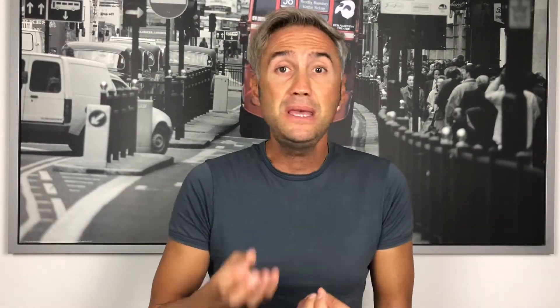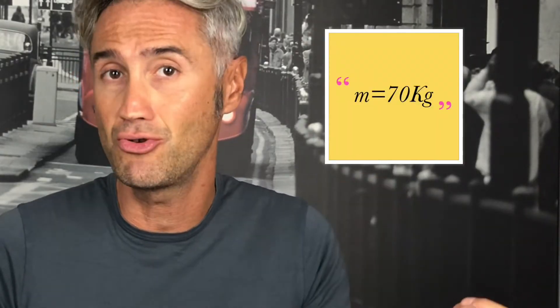The second base quantity is mass. The symbol of the quantity is m, the unit is kilogram, and the symbol of the unit is kg. For example, I have a mass of 70 kilograms — you can write M equal to 70 kilograms.